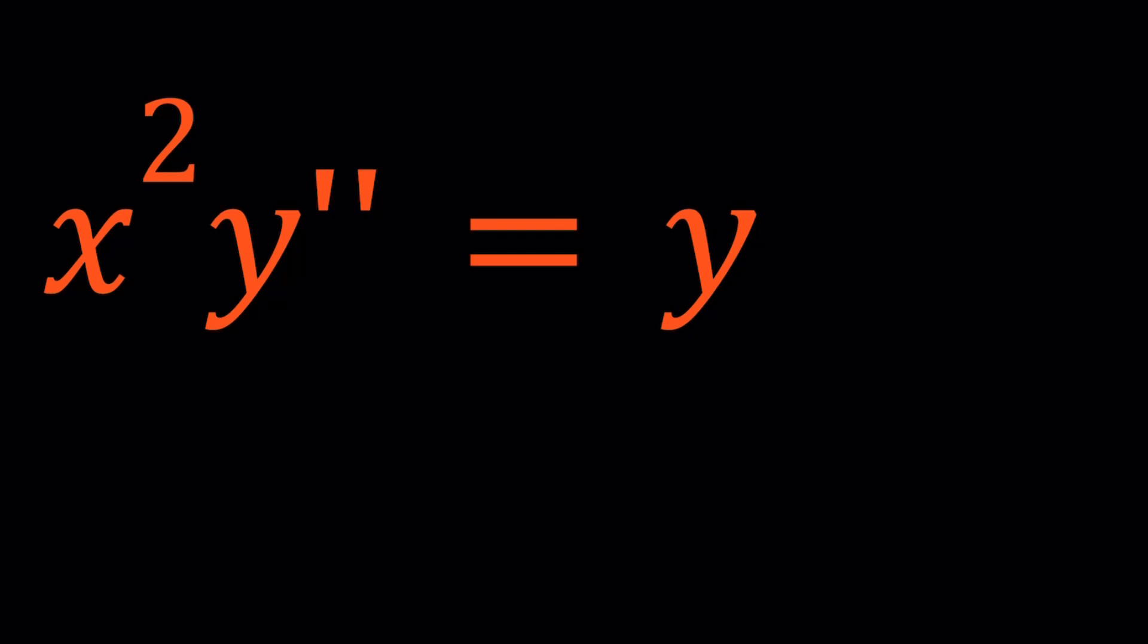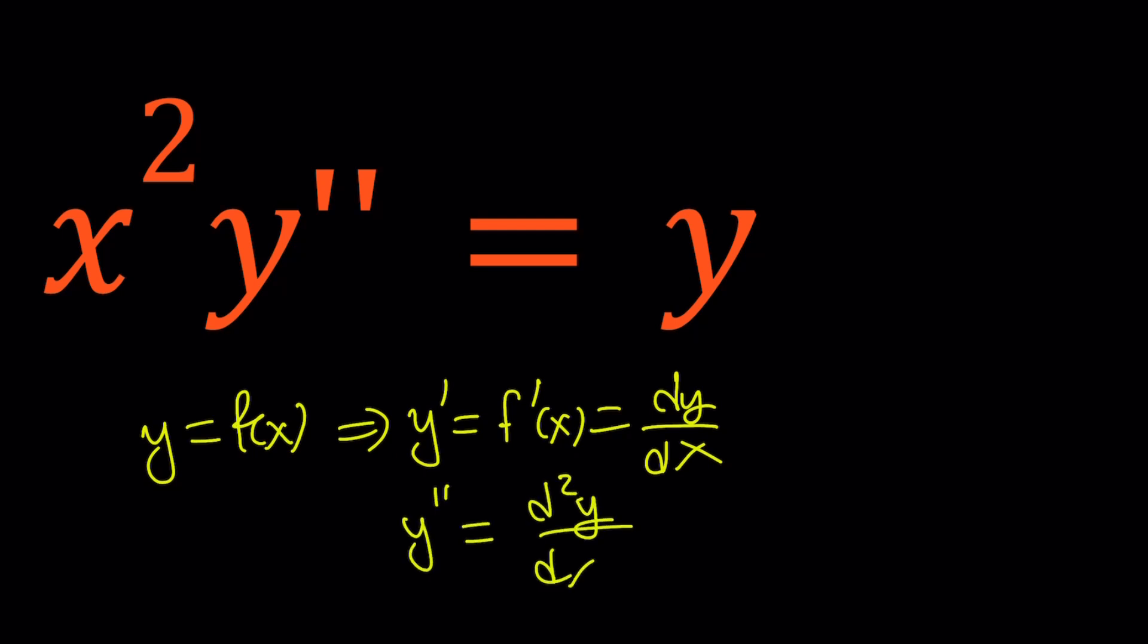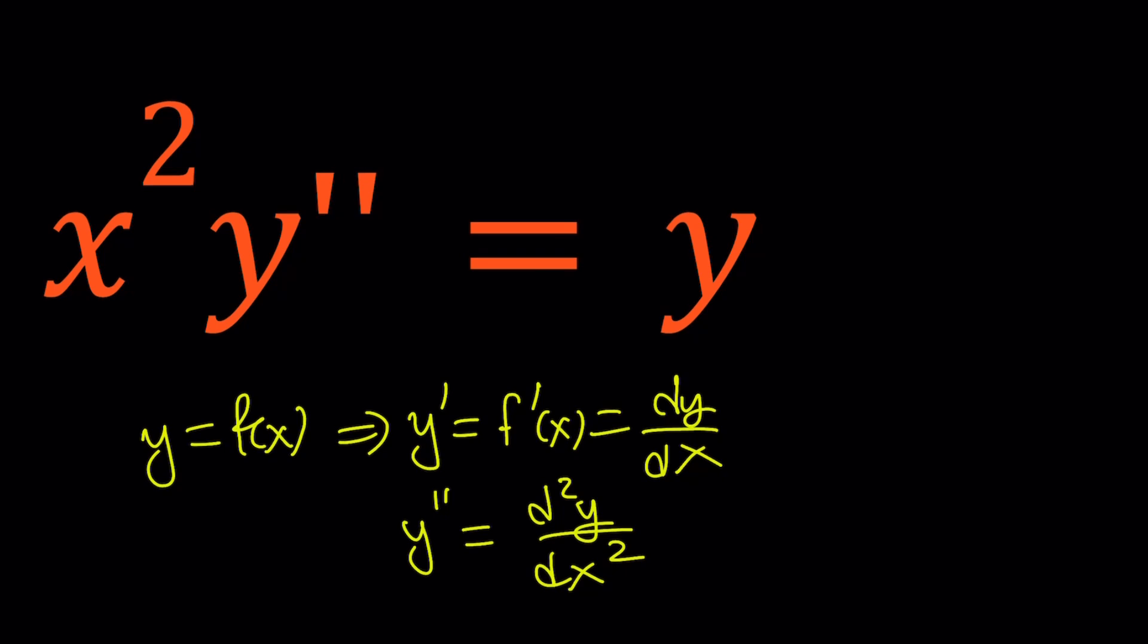y double prime is basically the second derivative of y, which we can also write in different ways. If y is a function of x, then y prime would be the first derivative, which is f prime. You could also write it as dy over dx, and the second derivative can be written as d squared y over dx squared. So we take the second derivative, multiply by x squared, and we get the function itself. So what kind of function satisfies this? That's what we're going to explore.